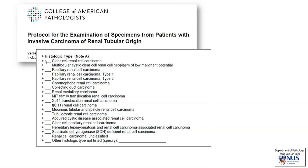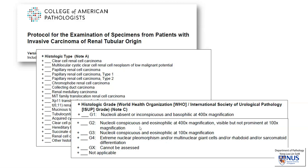In terms of microscopy, the histologic type is important. I'm going to show you a case in a minute, and we can think about what histologic type it may be. The other important thing we need to look at microscopically is the histologic grade, and it goes according to the nuclear pleomorphism and the prominence of nucleoli. So let's take a look at a case.